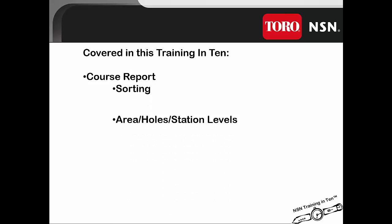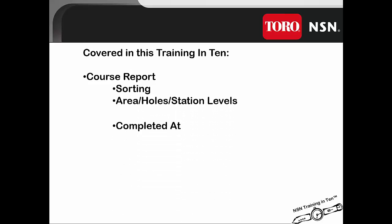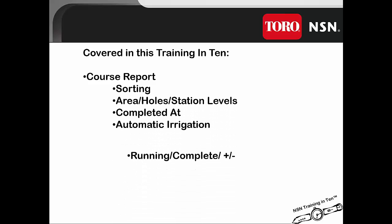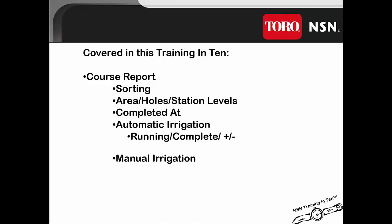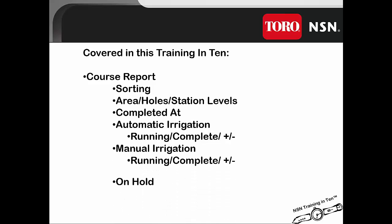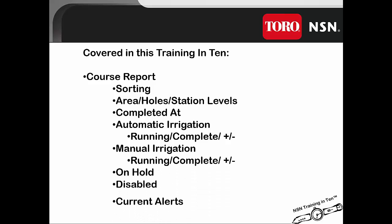It's going to cover sorting, holes, area and station levels, the completed at, automatic irrigation, manual irrigation, stations on hold, disabled, and the current alerts.